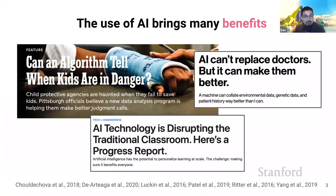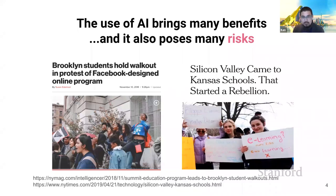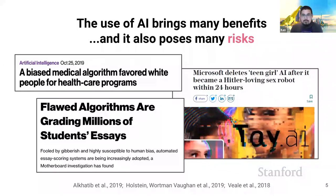But these benefits do not come without risks. For example, the use of AI risks automating away human interactions that people might not want to lose. In recent years, we've seen protests around the use of AI-based learning software in schools, where the software has been viewed as diminishing social interactions and the role of the teacher in the classroom. Modern AI systems are also susceptible to learning spurious patterns and harmful biases from data, and they risk propagating these biases at an unprecedented scale and speed. They lack many of the common sense or pro-social reasoning abilities that humans may take for granted, so they can also fail in ways that a human would not, such as assigning high grades to well-structured but gibberish student essays.